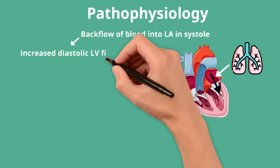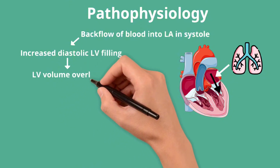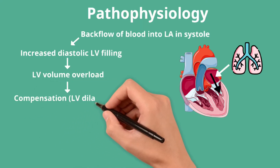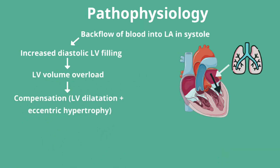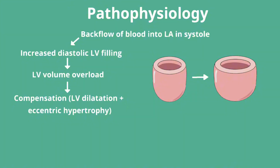If this occurs acutely, the patient would decompensate quickly because there is not time for the heart to adapt. In chronic mitral regurgitation, however, the LV dilates and undergoes eccentric hypertrophy, which means wall thickening but in the context of cavity dilatation. This helps it cope with the increased preload and maintains a relatively normal forward flow of blood into the aorta.